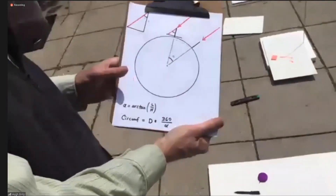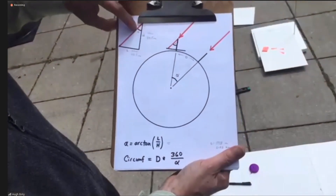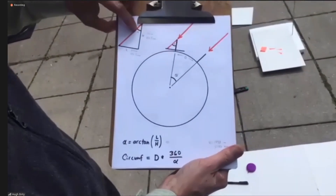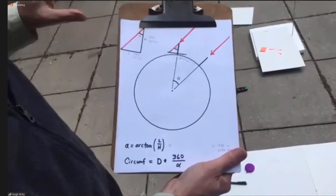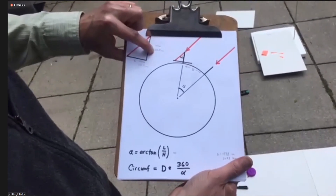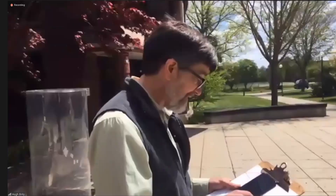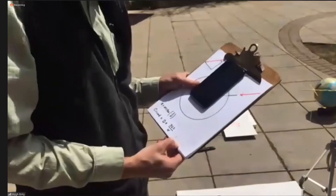What each of you should be doing is taking the arc tangent of this angle alpha — that's what we're trying to determine. You get angle alpha by taking the arc tangent of the length of the shadow divided by the height of the shadow. The answer is supposed to be 40,075 kilometers, and we got 39,772, so we're off about 300 kilometers. That's less than 1% error.